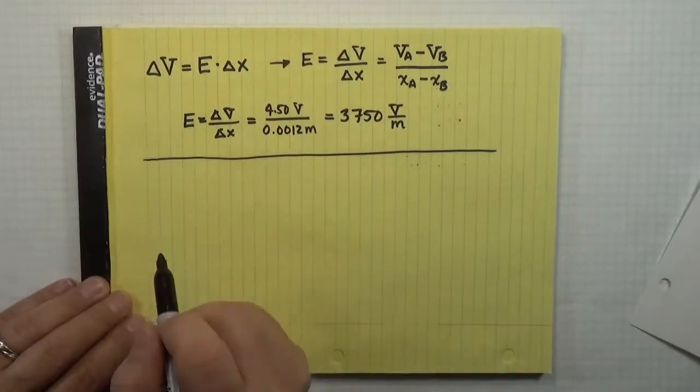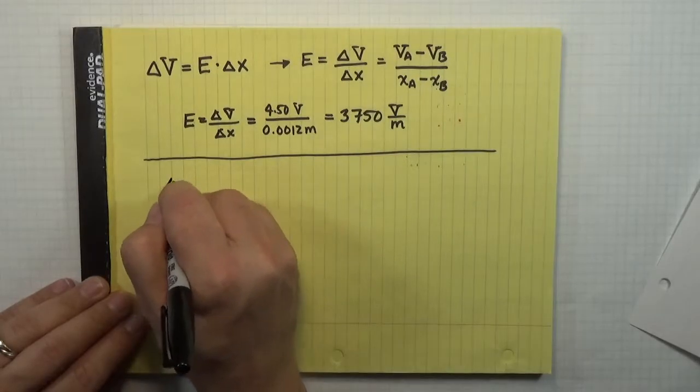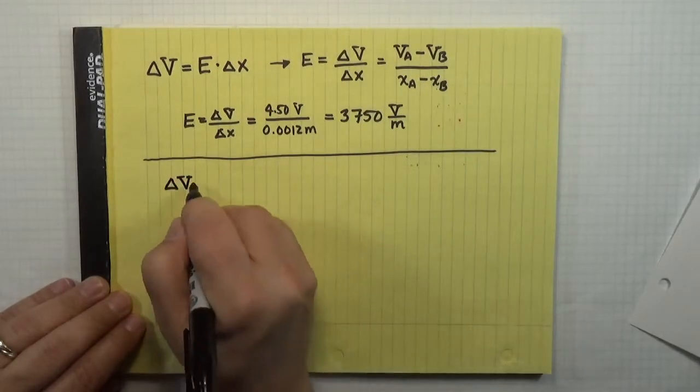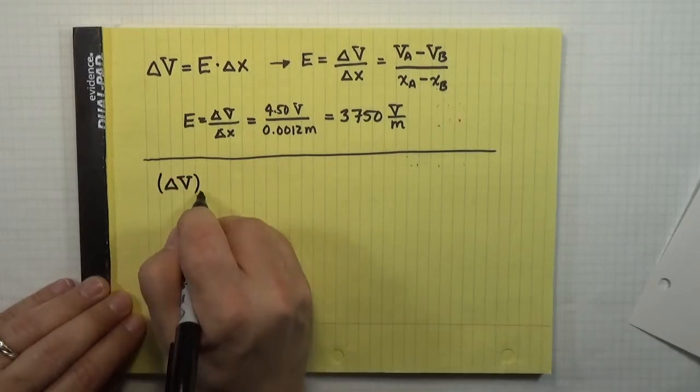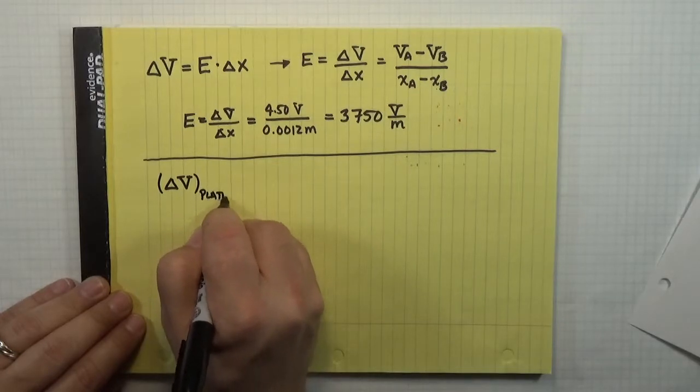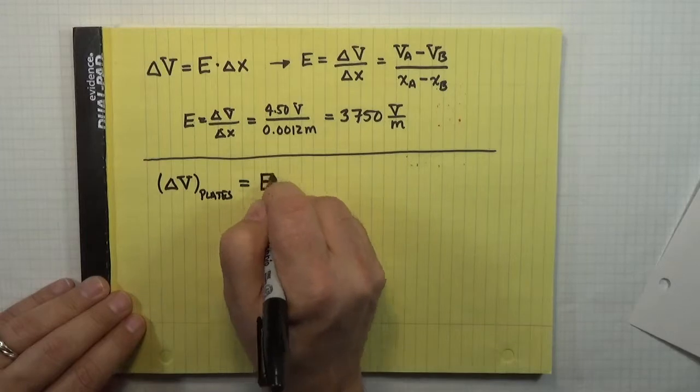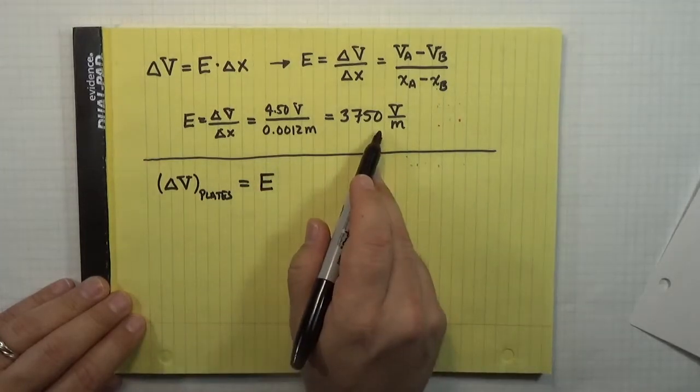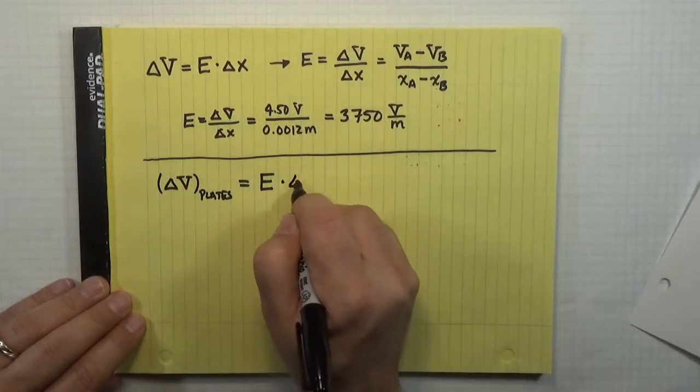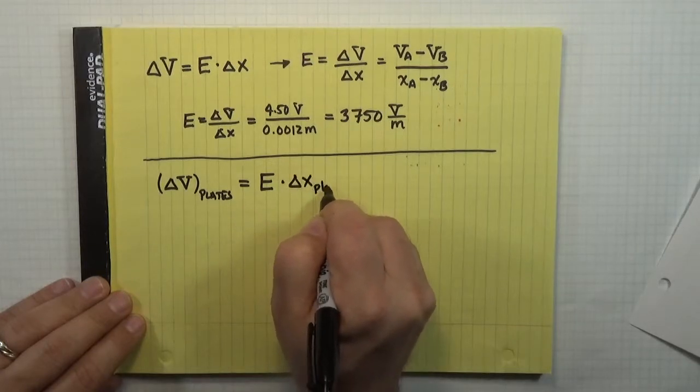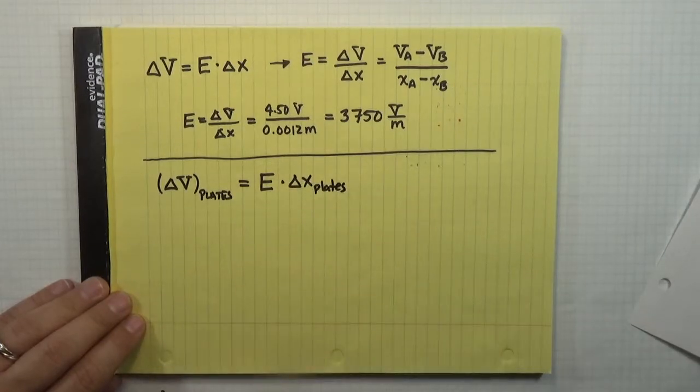So if I go back to where I started, delta V. In this case, the change of potential between the plates is still equal to E delta X, in this case, I now know E because I figured it out up here, times the delta X between the plates, which, in fact, I'm told.